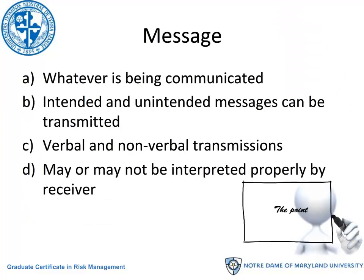Now we arrive at the message piece of the communication model — whatever information is being communicated. There are intended messages, where you get the information across in the manner you had hoped. And there are unintended messages that can be transmitted, sometimes because of technical difficulties with the transmission, other times because of nonverbal cues and body language. So the message may or may not be interpreted properly by the receiver. We begin to see all the different ways that communication can go awry.